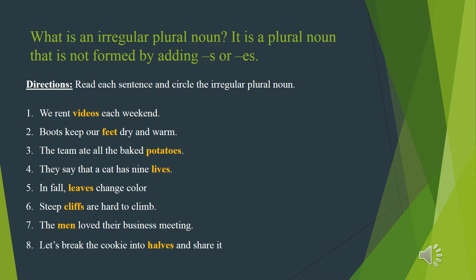Directions: Read each sentence and circle the irregular plural noun. Number 1: We rent videos each weekend. 2: Boots keep our feet dry and warm. 3: The team ate all the baked potatoes. 4: They say that a cat has nine lives. 5: In fall, leaves change color. Number 6: Steep cliffs are hard to climb. 7: The men loved their business meeting. 8: Let's break the cookie into halves and share it.